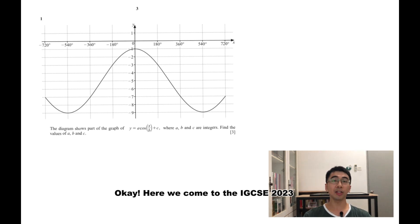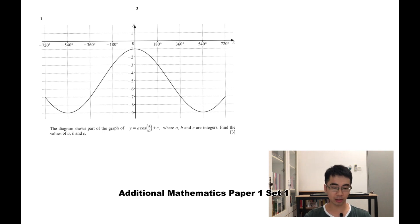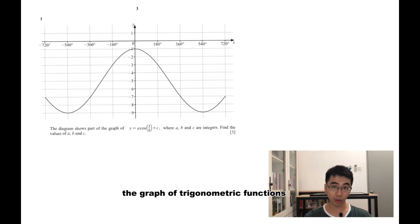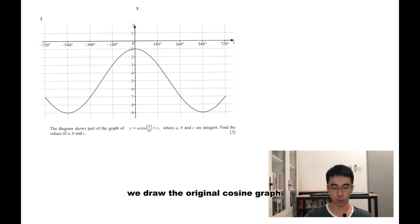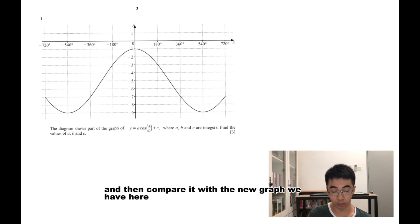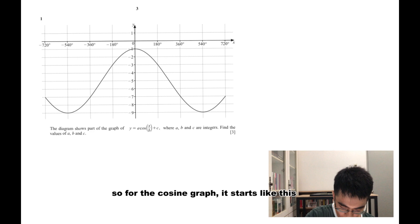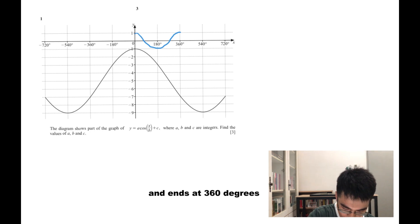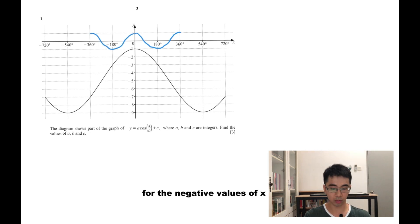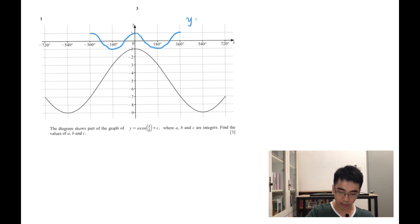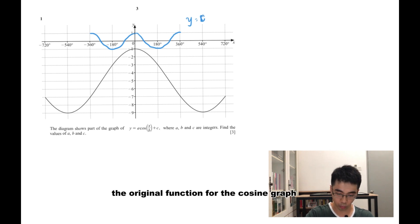Here we come to the IGCSE 2023, October and November, Additional Mathematics, Paper 1, Set 1. The first question is about the graph of a trigonometric ratio. This time we have the cosine graph. Let's draw the original cosine graph and then compare it with the new graph. The cosine graph starts here and ends at 360 degrees. So here is y equals cosine x — this is the original function.